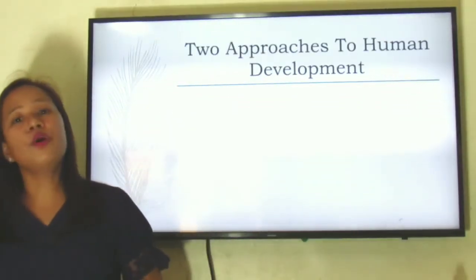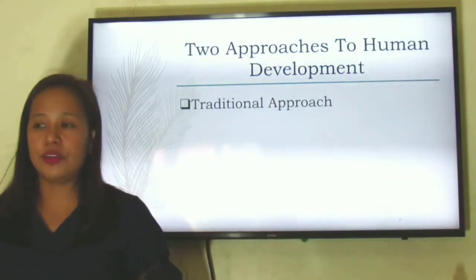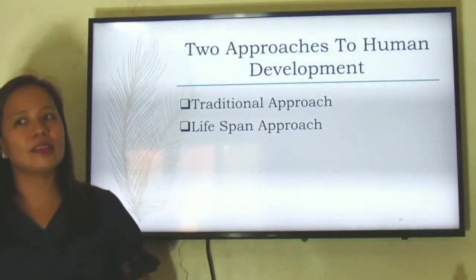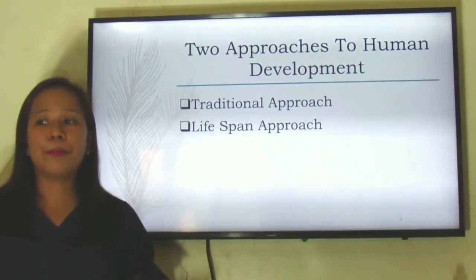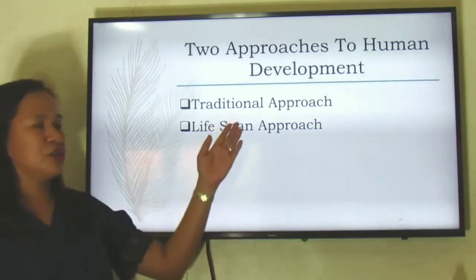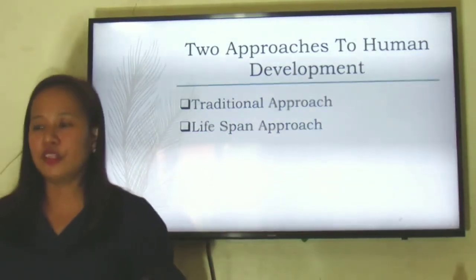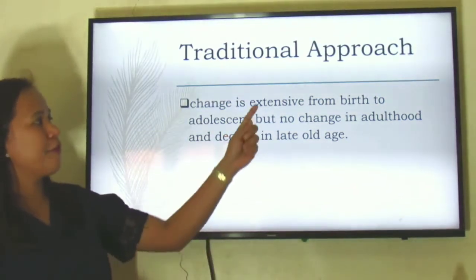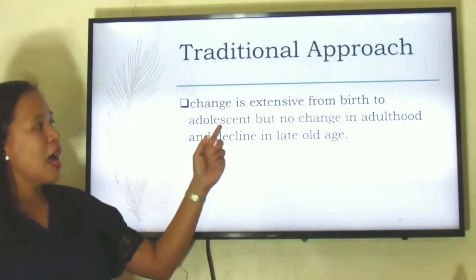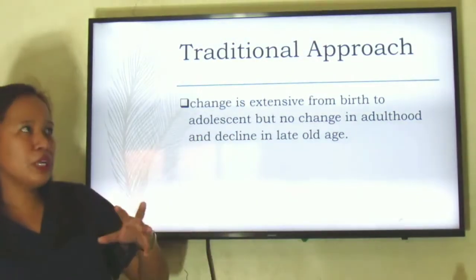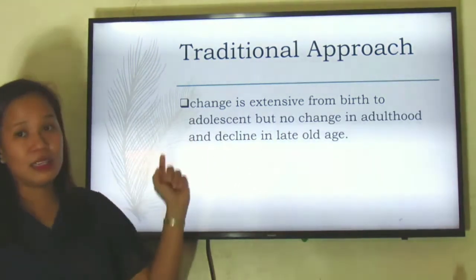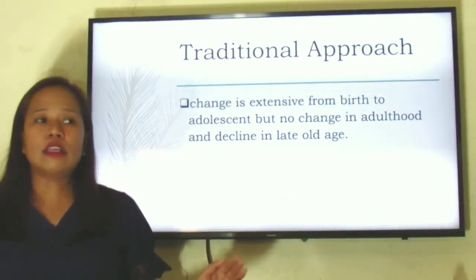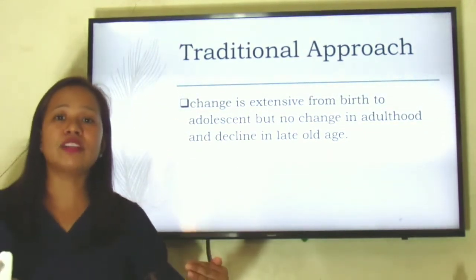There are also two approaches to human development. The first is the traditional approach, and the second is the lifespan approach. Many researchers have debated which is the better approach. In the traditional approach, changes are extensive from birth to adolescence, but no change at all in adulthood. And then eventually, at old age, this change declines. It is believed that a person only grows and develops during the early stage of life up through adolescence, and then stops.